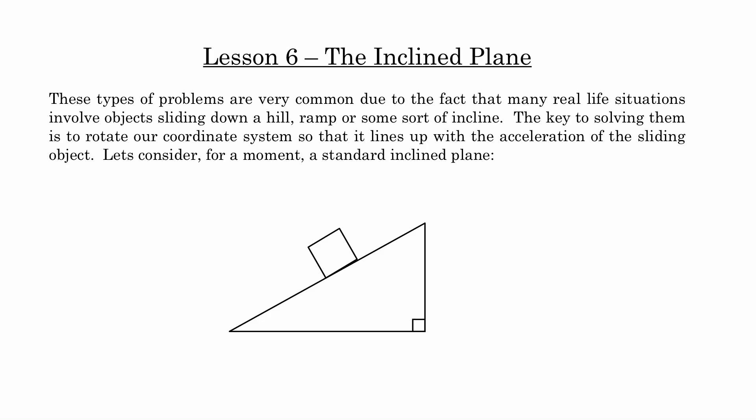We're looking at more of Newton's laws in two dimensions, focusing on a special case today. Just like projectile motion is a special case of motion in two dimensions, the inclined plane is a very famous special case. These types of problems are very common — many real life situations involve something slipping down a hill or a ramp. The key to solving these problems is to use a creative choice for our coordinate system so that it lines up with the acceleration of the sliding object.